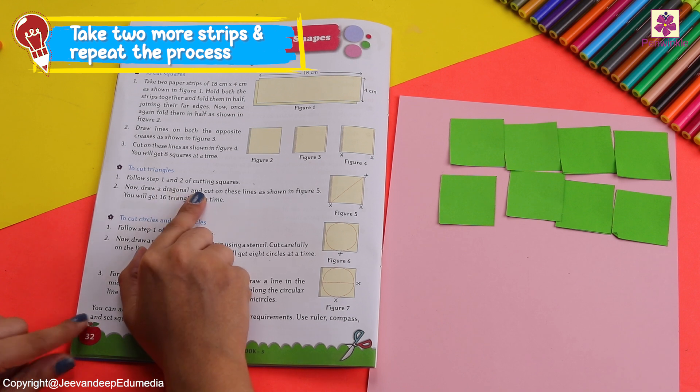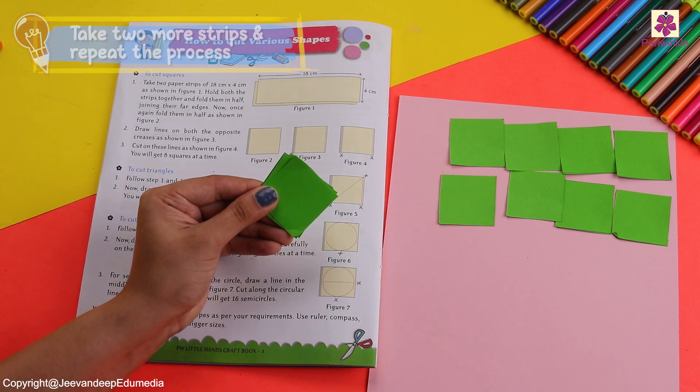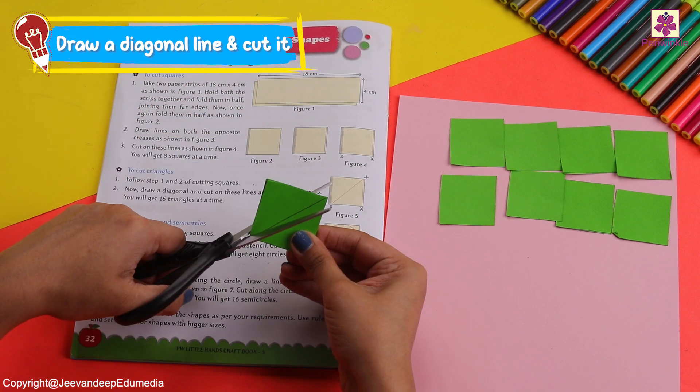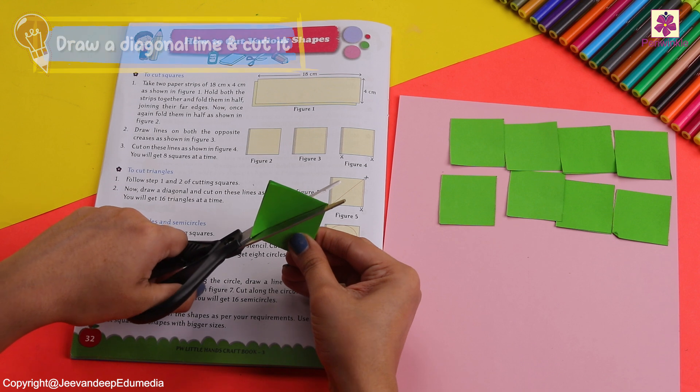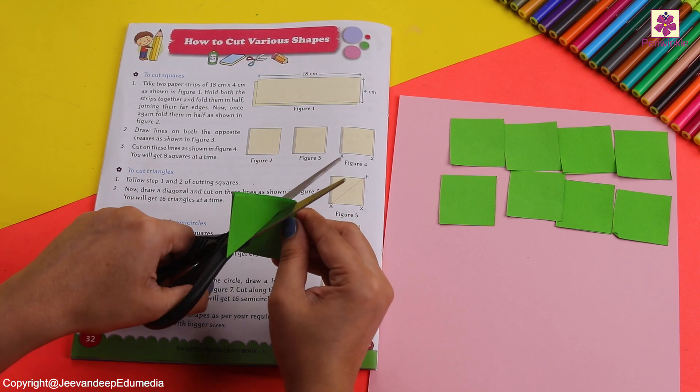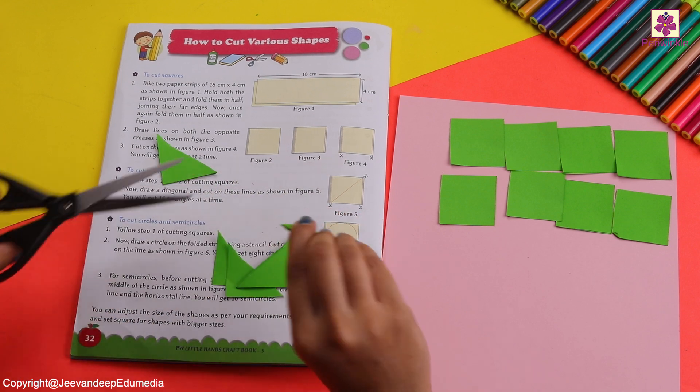This is such an amazing trick. Let's start by cutting triangles now. We will follow the same step, get the square and then make a diagonal line. After that, let's cut it on top of the diagonal line.